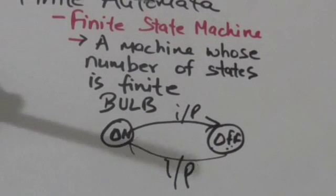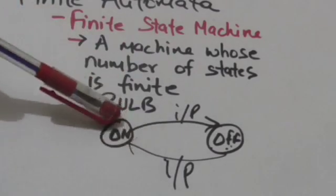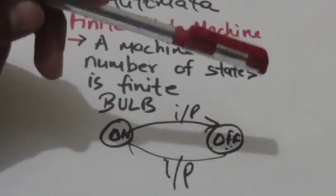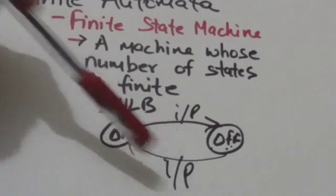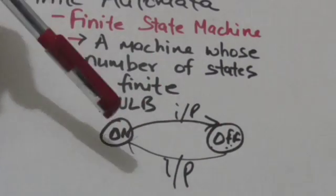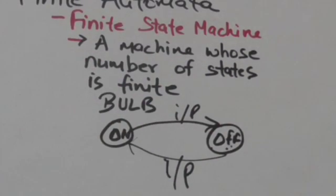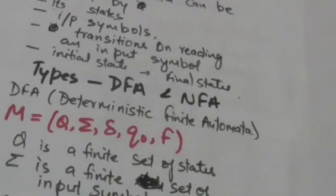Now when bulb is in on state and we apply input through switch, it jumps to off state. And when it is in off state and we apply input through switch, it jumps to on state. So to describe a finite automata, we must